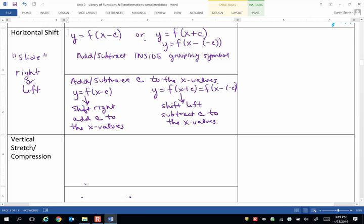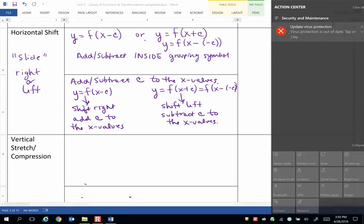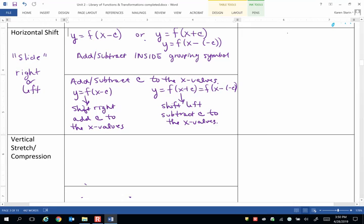So, when you have a horizontal shift, you either add or subtract a value to the x's inside the grouping symbol, inside whatever you identify as the parent function. And it's almost like it's the opposite of what you want to do. So, let's once again look at the absolute value function.